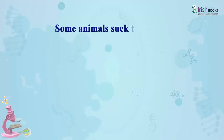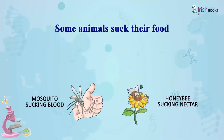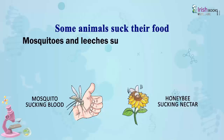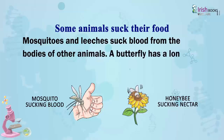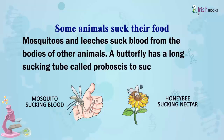Some animals suck their food. Mosquitoes and leeches suck blood from the bodies of other animals. A butterfly has a long sucking tube called a proboscis to suck nectar from flowers.